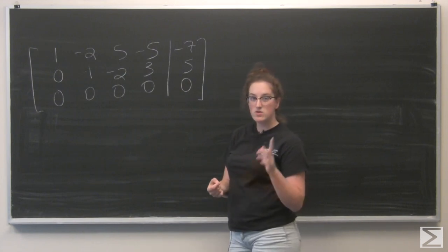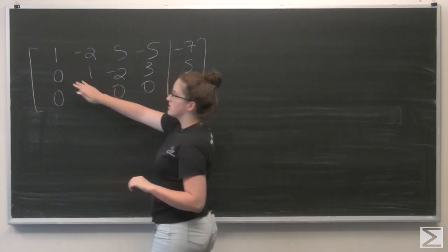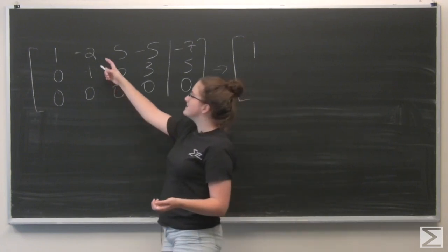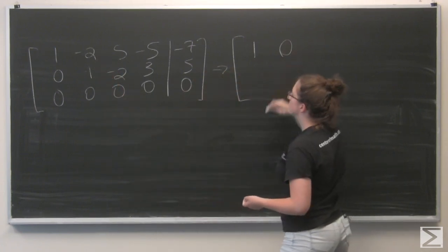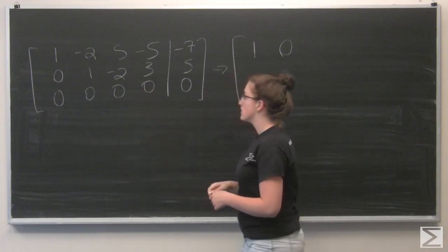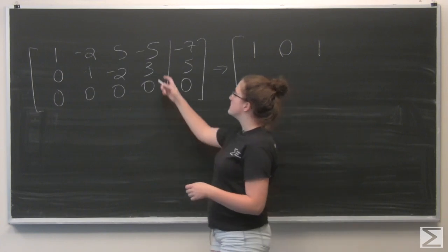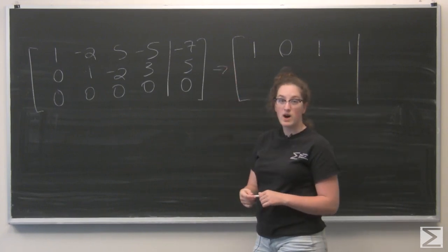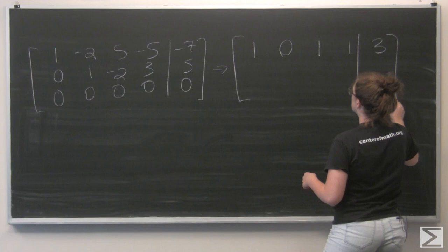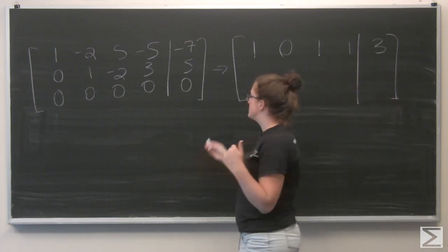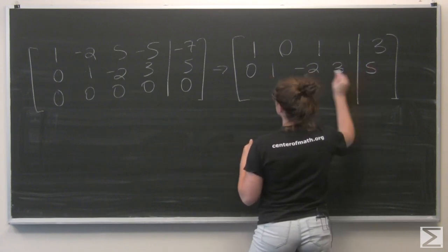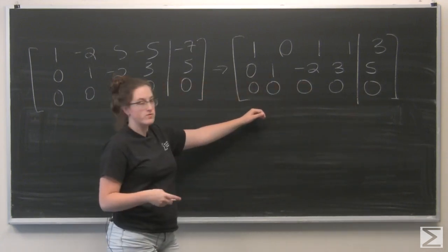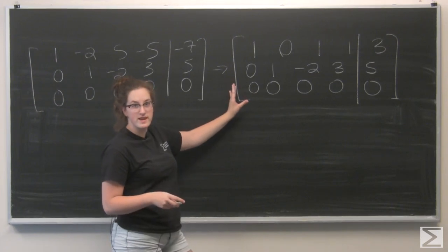Okay, so everything matches here. Now I need to add two times the second row to the first row. So I have one plus zero gives me one. And then negative two plus two is zero. Five minus four is going to be one, and negative five plus six is going to be positive one. Negative seven plus ten gives me positive three. And then I'm just going to carry the other two rows over as is. So now this matrix is in reduced row echelon form. I have two leading ones, and in each column that has a leading one the rest of the elements are zero.